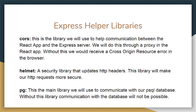In addition to the libraries generated by the Express command, we'll use three additional libraries. First, the cors library helps us communicate with our React frontend from our Express server through a proxy — without it, we'd receive a cross-origin resource error. Next, the Helmet library makes our HTTP requests more secure by automatically updating the headers. Finally, the pg library is what we'll use to communicate with our PSQL database from our Express server, similar to how MySQL.js works for MySQL.